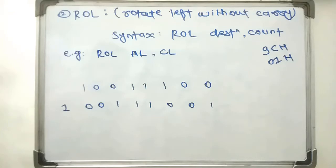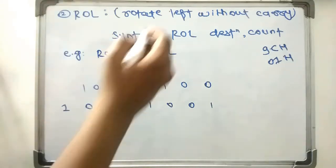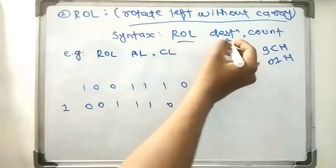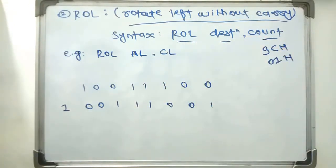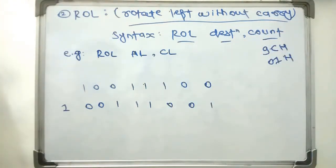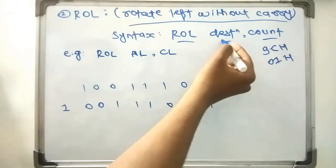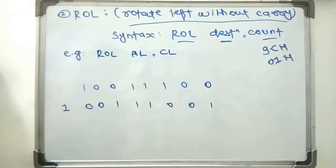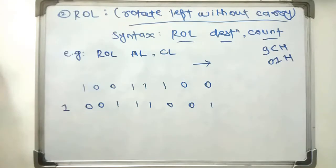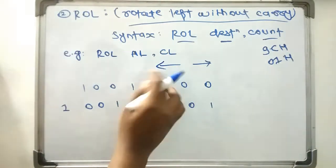Next we will look at the second instruction, ROL — rotate left without carry. The content will be rotated towards the left.